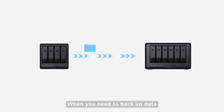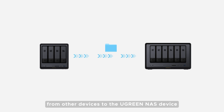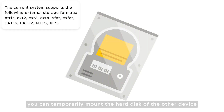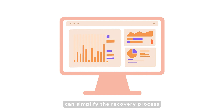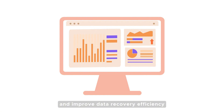When you need to back up data from other devices to the uGreen NAS device, you can temporarily mount the hard disk of the other device as an external storage device to facilitate quick data transfer. When you need to restore data, using the hard disk as external storage can simplify the recovery process and improve data recovery efficiency.